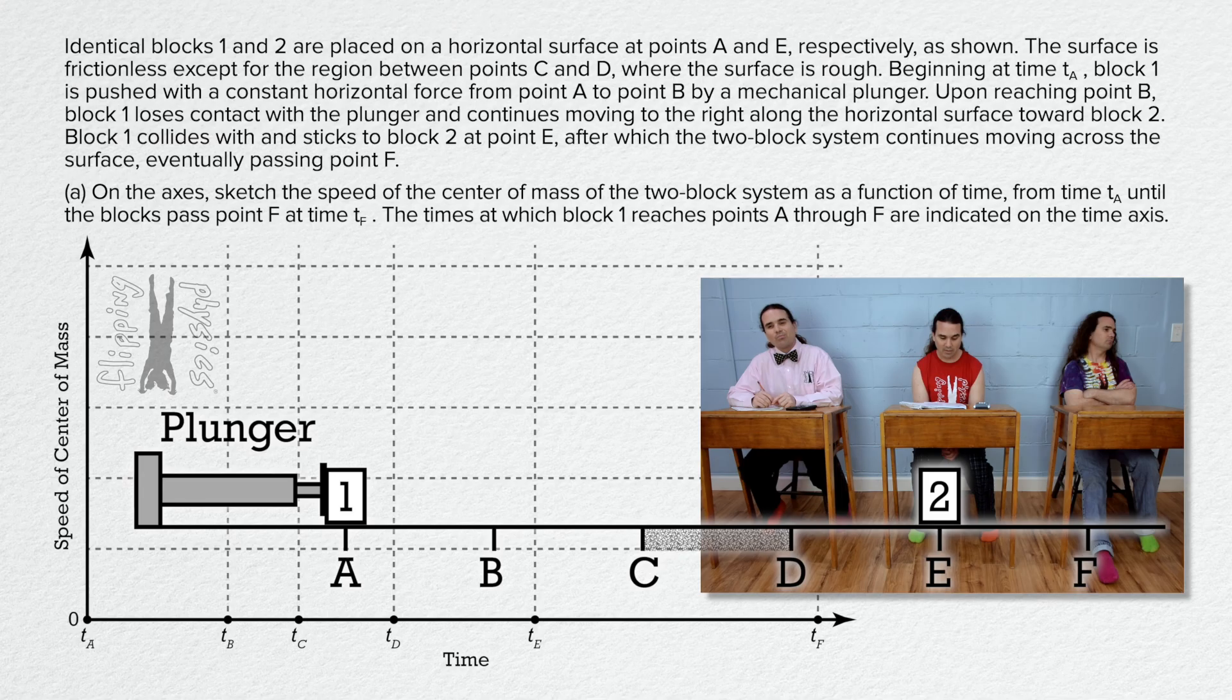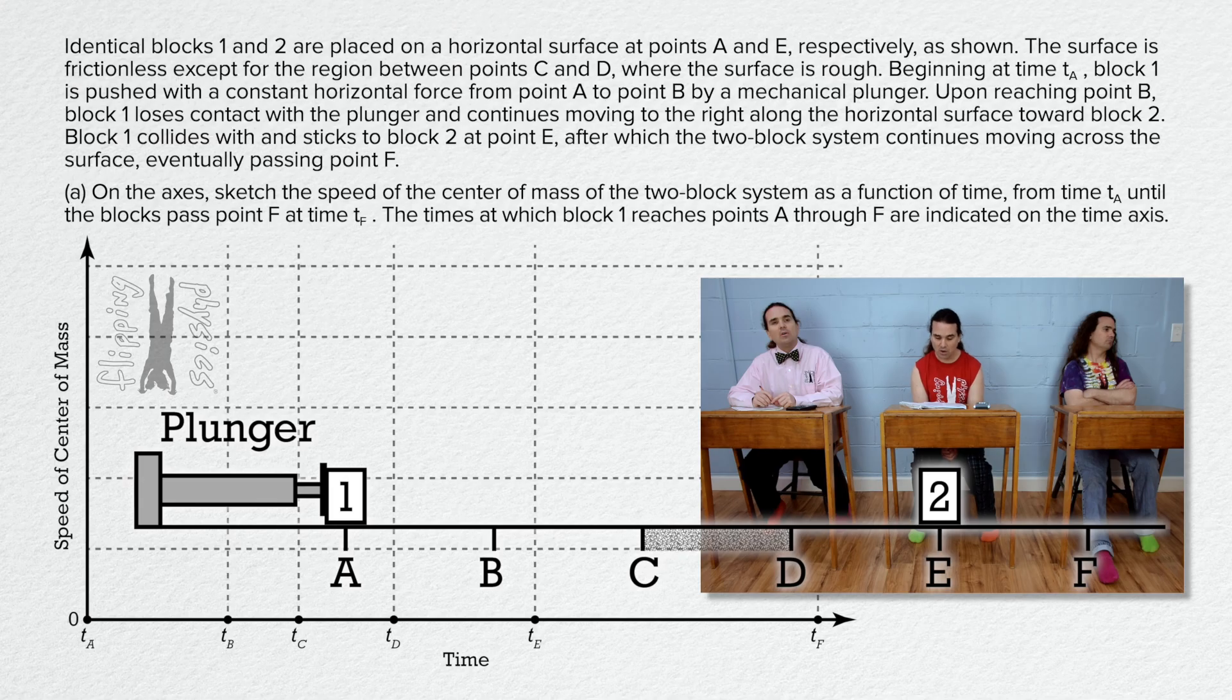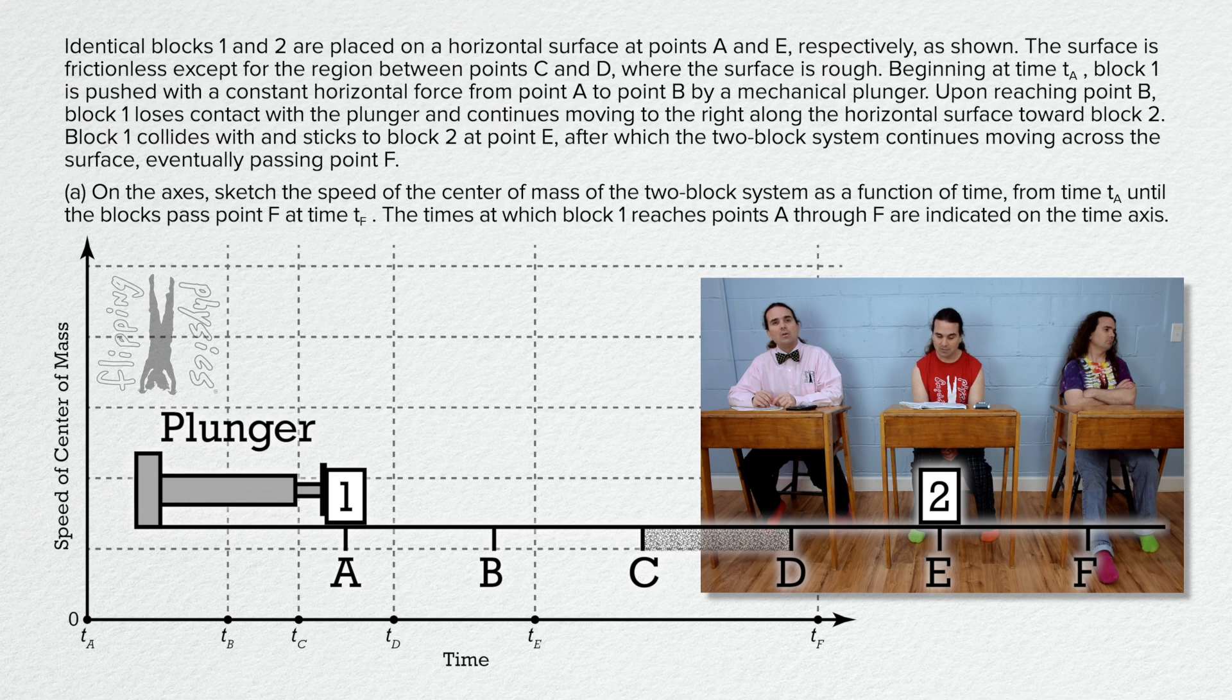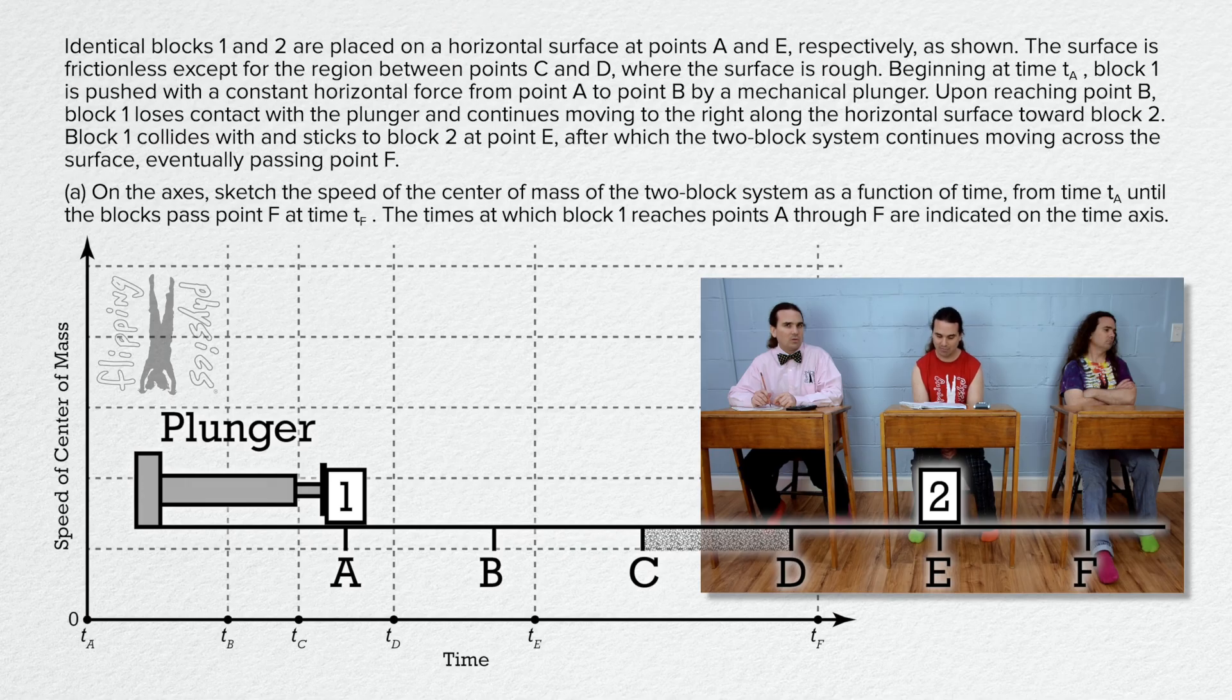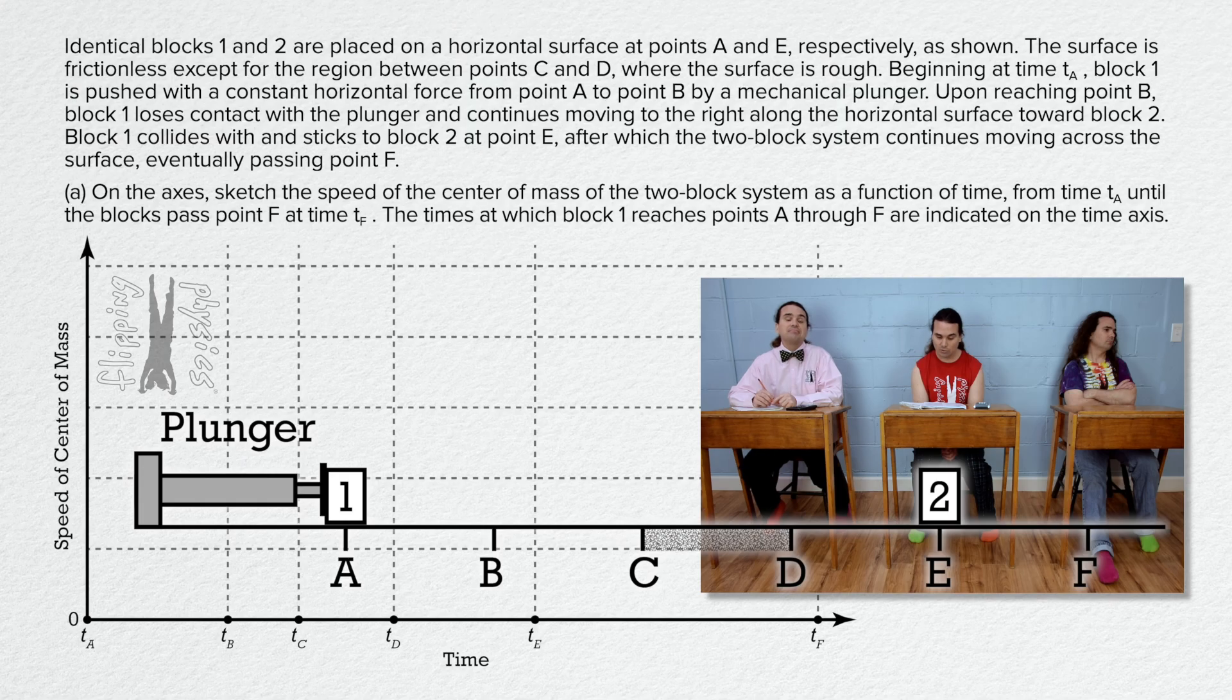Block 1 collides with and sticks to block 2 at point E, after which the two-block system continues moving across the surface, eventually passing point F. Part A. On the axes, sketch the speed of the center of mass of the two-block system as a function of time from time TA until the blocks pass point F at time TF. The times at which block 1 reaches points A through F are indicated on the time axis.